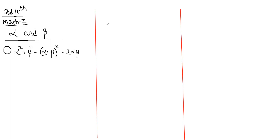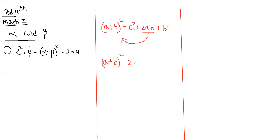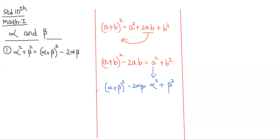You have studied in seventh standard the formula (a + b) whole squared. Now what is (a + b) whole squared? It is a squared plus 2ab plus b squared. When we shift plus 2ab to the left hand side, we get (a + b)² - 2ab = a² + b². Substituting a as alpha and b as beta, we get alpha squared plus beta squared equals (alpha plus beta) whole squared minus 2 alpha beta, which is our first identity.